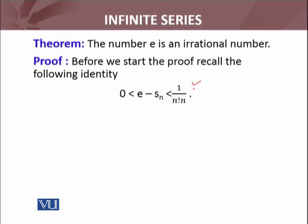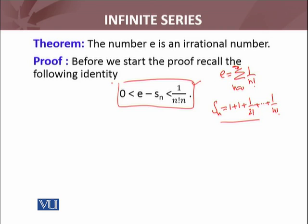Before we start the proof, recall the following identity. We have used the approximation of e by the sequence of partial sums s_n. Here e is defined as the summation from n equals 0 to infinity, and s_n is the sequence of partial sums: 1 + 1 + 1/2! + ... + 1/n!. We have proved the approximation inequality for e using this.